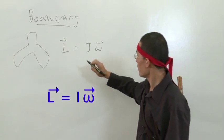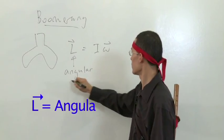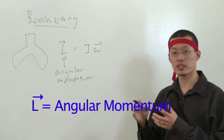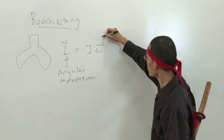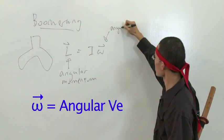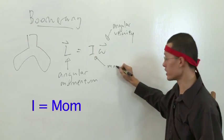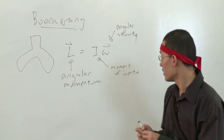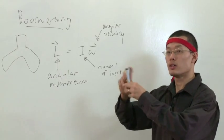L equals I omega. This is the critical formula for the boomerang. Now, L is the angular momentum. If you know what momentum means, angular momentum is actually how much momentum it has in the spinning sense of the word. Omega here is actually the angular velocity. And finally, I is your moment of inertia. Okay, we can take this as a definition. This is the definition of what angular momentum means. It means the moment of inertia multiplied by omega, the angular velocity. And angular velocity is basically how fast something is spinning. How many angles per second.